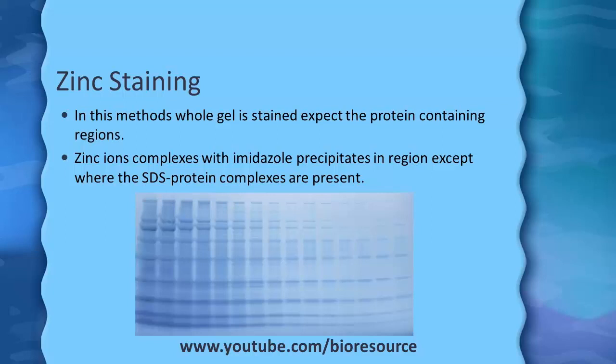Next is zinc staining. Zinc staining is a very rapid method which can be completed in around 15 minutes. The other methods take longer time as they require both staining and de-staining steps. Zinc staining is also a very sensitive method, with sensitivity similar to the commercial Coomassie Brilliant Blue staining method.